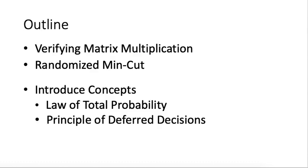In this lecture, we will talk about how to verify matrix multiplication efficiently using a randomized algorithm. And then we will talk about a randomized min-cuts algorithm for a certain graph problem. But before that, we will introduce two concepts: the law of total probability and the principle of deferred decisions.